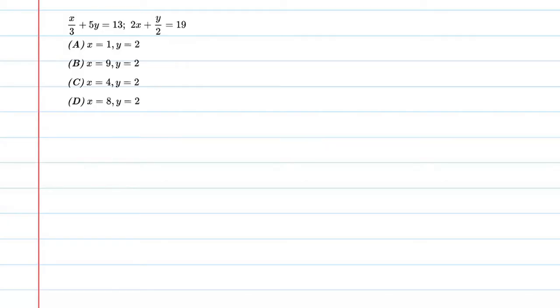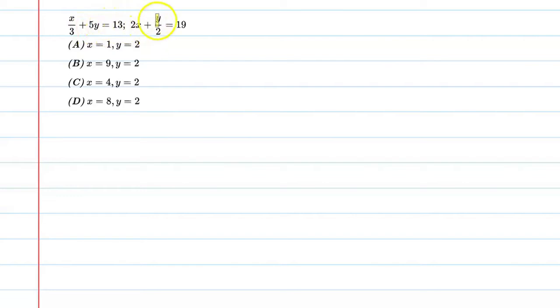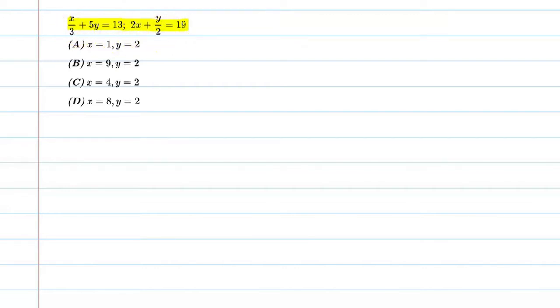Hello students, let's solve this question. We have x upon 3 plus 5y equal to 30, and 2x plus y by 2 equal to 90. These equations are given to us, and we basically have to solve them. Alright, so let's start this question.